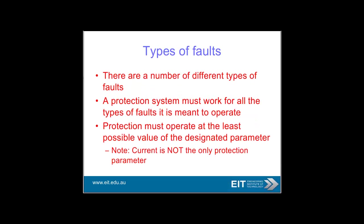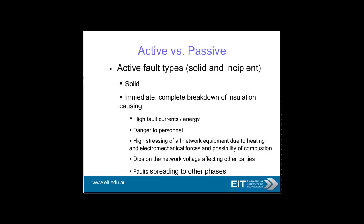The protection system must work for all types of faults it's meant to operate on. Bear in mind that current is not the only parameter you look at — there are a lot of other potential faults to detect. Typical faults: active or solid faults involve high fault currents, danger to personnel, high stress, degraded network voltage, and faults spreading to other phases.